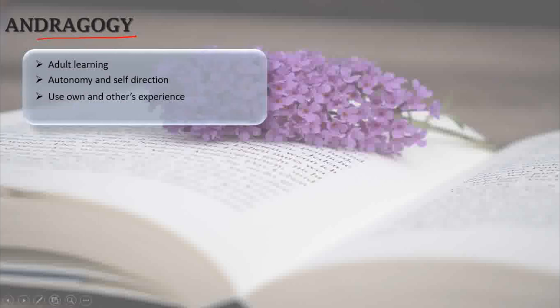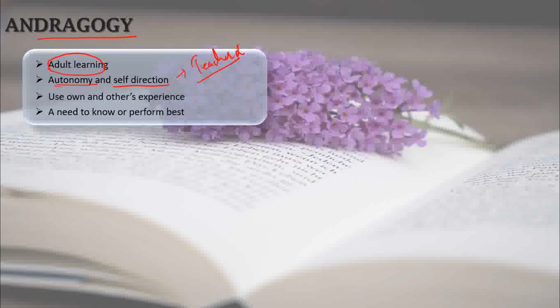Next, coming to Andragogy, which is actually adult learning. It speaks about the adult learner, as opposed to the child or student learning at the school level. In Andragogy, there is autonomy and self-direction. Adults are free to make their own decisions, are autonomous, self-directed towards their goals, and use their own and others' experiences.